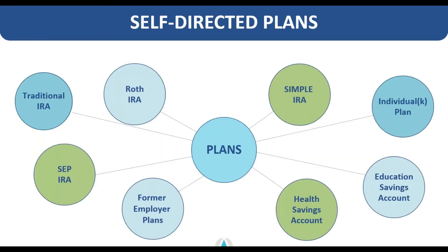There are a number of different types of self-directed plans you could utilize. We offer traditional and Roth IRAs, which are very commonly known, as well as SIMPLE and SEP IRAs for small business owners. You can roll over former employer plans into an IRA account or a solo or individual K plan. We also offer health savings and education savings accounts if you're trying to put some money aside for health expenses or your children's educational expenses. All of these types of plans do allow for self-direction and a custodian like Advanta IRA is here to provide that for you.